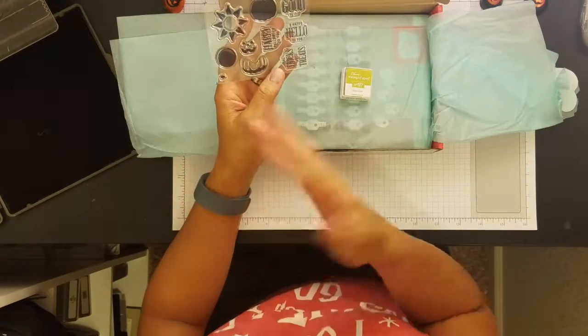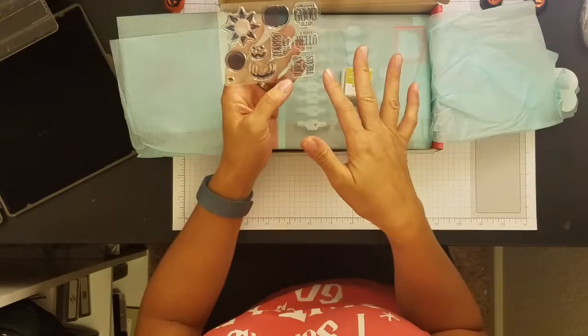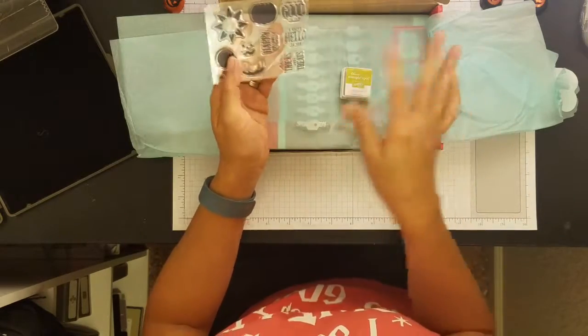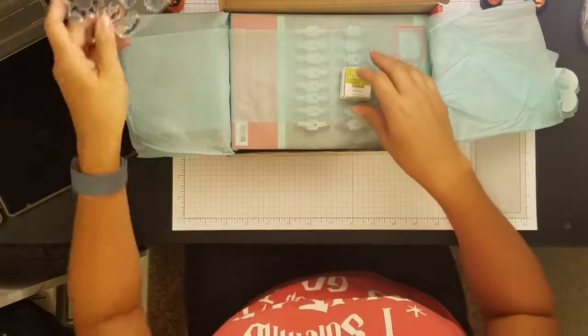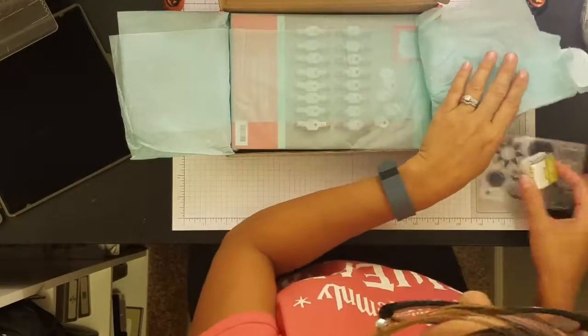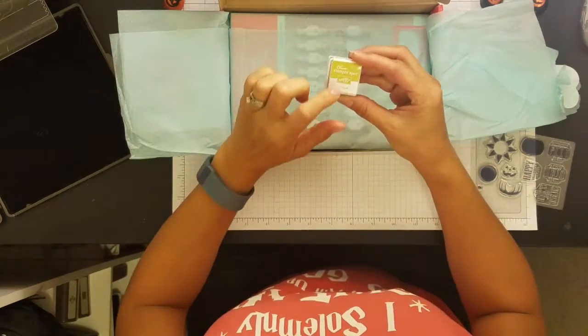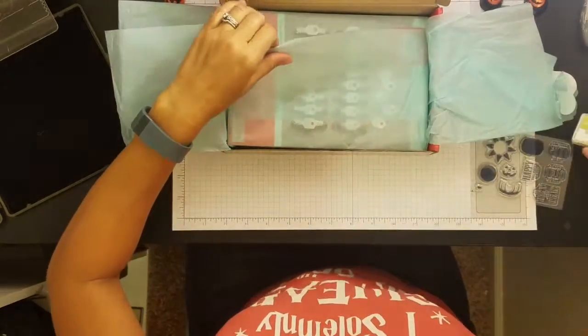They kind of have a Halloween theme, but if you don't really celebrate Halloween or you don't want to give it as a Halloween treat, you can stamp one of the other sentiments. So I'm just going to set that aside. And this is Old Olive. It's really pretty green. I'm going to set that aside.